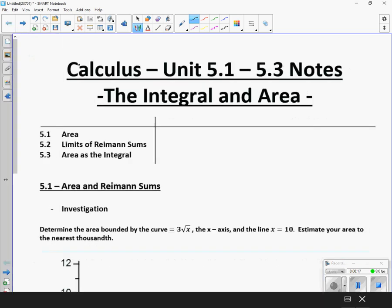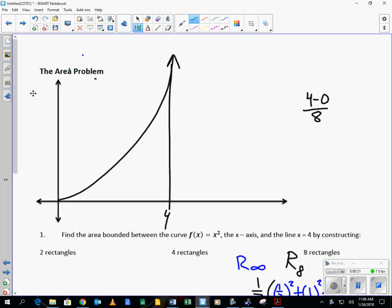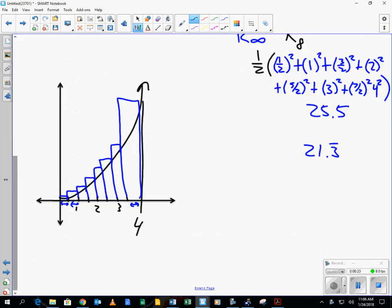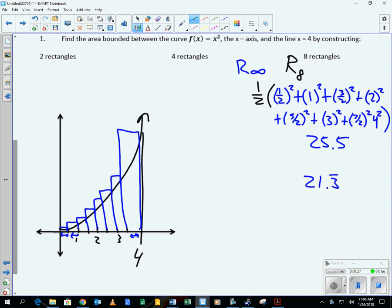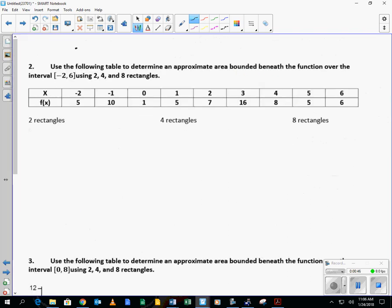Did we finish off example one yesterday? So yesterday we finished off with doing eight rectangles. We said we're just going to operate for the right-hand side. We got 25.5. We saw that the actual area was 21.33. We did that on our calculator. And we are going to move to r sub infinity. So we're going to do an infinite number of rectangles in order to compute the exact area.